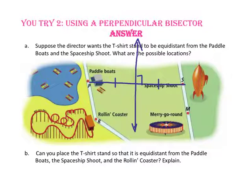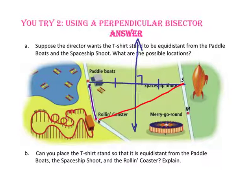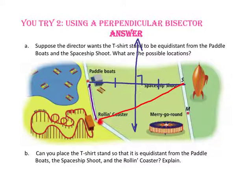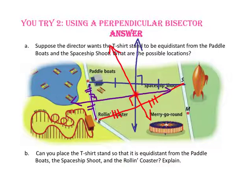Part B asks if we can place a t-shirt stand equidistant from the paddle boats, the spaceship chute, and the rolling coaster. We draw three segments since we now have three endpoints, and we need three perpendicular bisectors. We already have the perpendicular bisector between the paddle boats and the spaceship chute. Drawing the perpendicular bisector between the paddle boats and the rolling coaster, and between the rolling coaster and the spaceship chute, all three perpendicular bisectors intersect at the same point — that is the location of the t-shirt stand equidistant from all three.